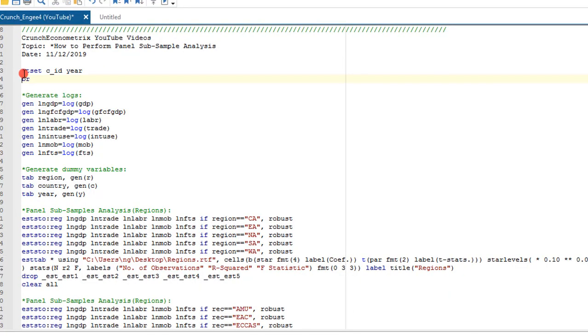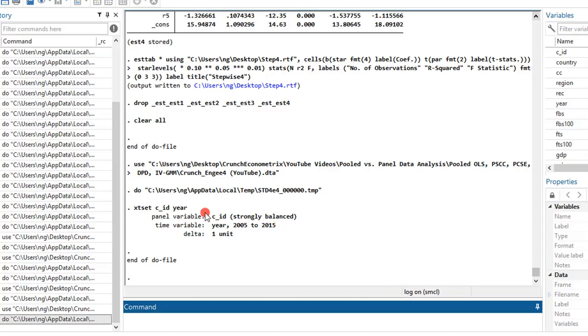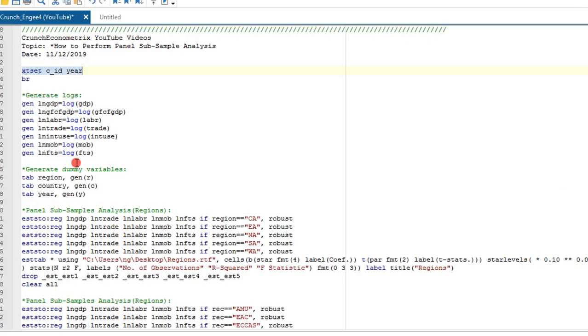Always remember to execute the xtset command before you start your panel analysis. Let me do that right away. I've executed and here I have a strongly balanced panel as reported by Stata. I'm also using the log variants of these variables so I've generated here logs. I've also created regional dummies but I won't be using dummies in this tutorial.